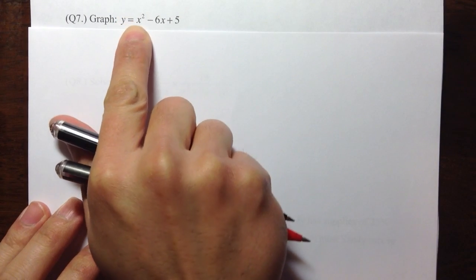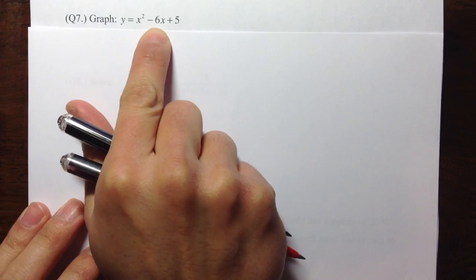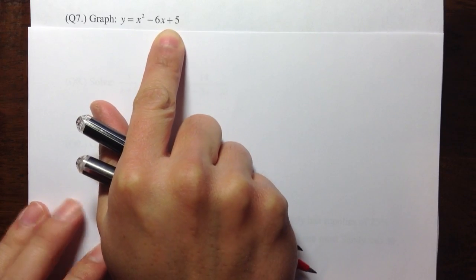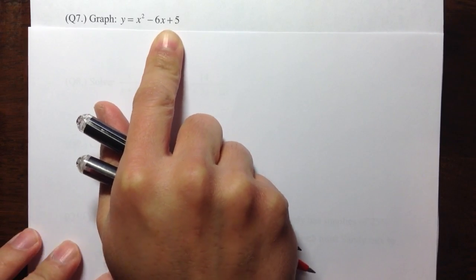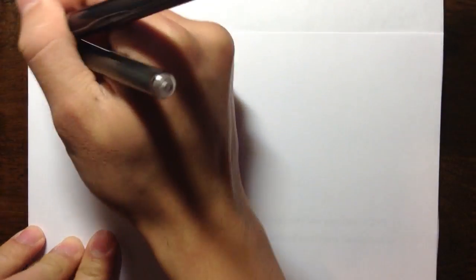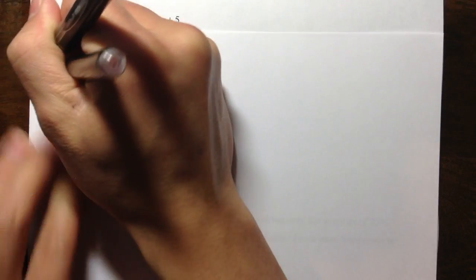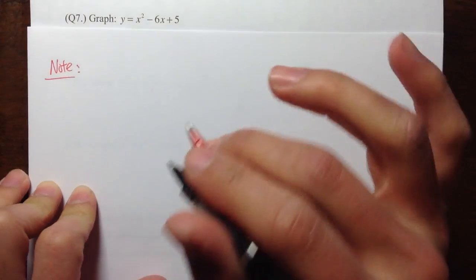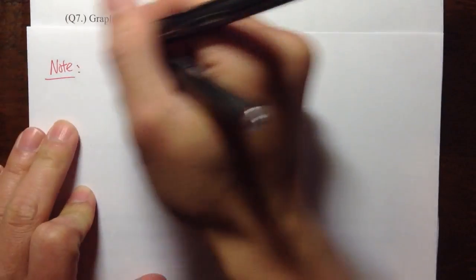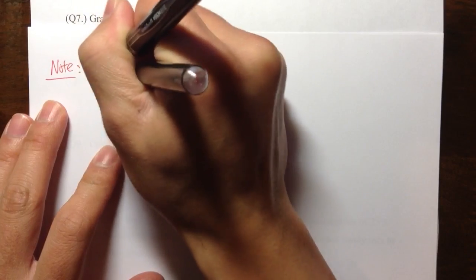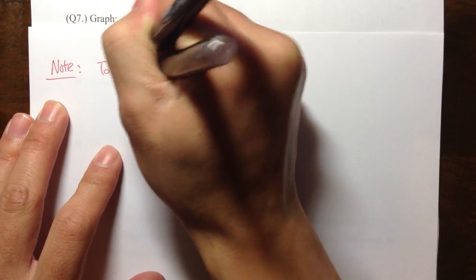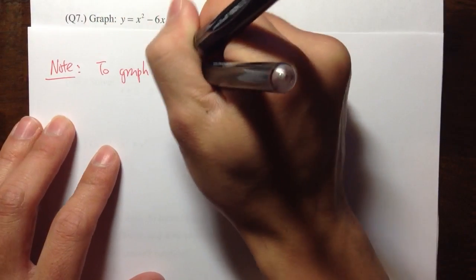Okay, number seven, we are going to do some graphs. The graph of the equation y is equal to x squared minus 6x plus 5. It's an example of a parabola.